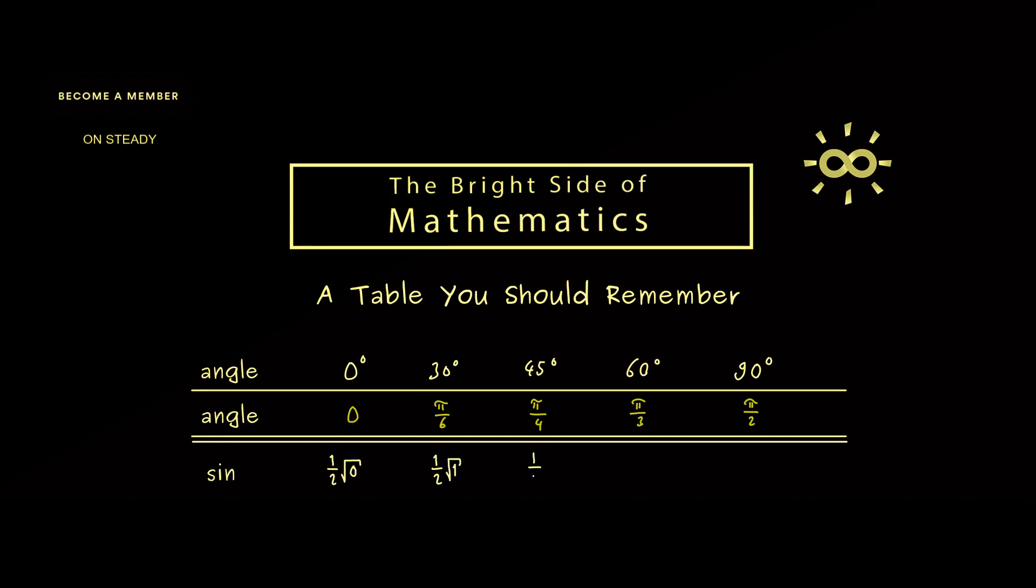And then we can continue to 1/2 the square root of 2, 1/2 the square root of 3, and 1/2 the square root of 4. Of course, we could simplify these values, and obviously in calculations we should, but here it's much easier to remember the table in this way.